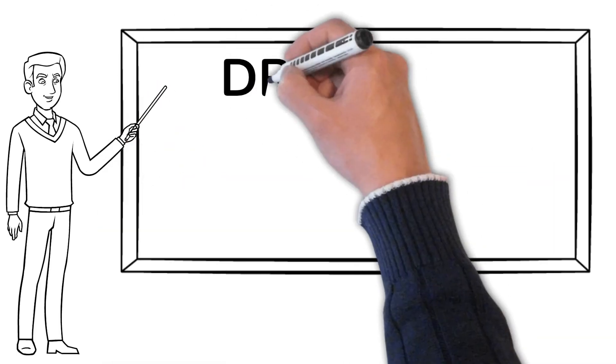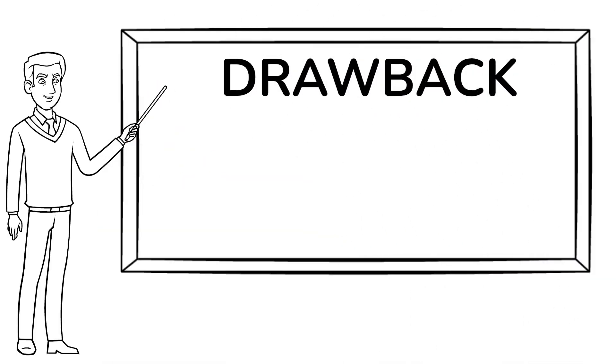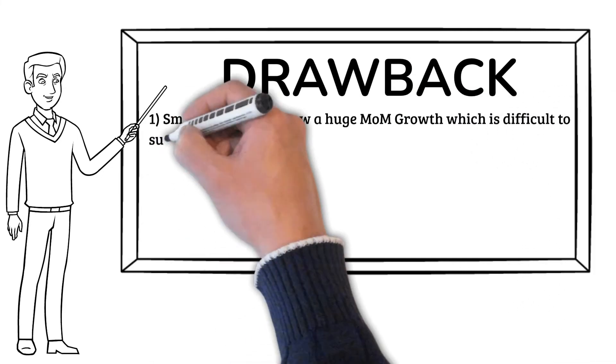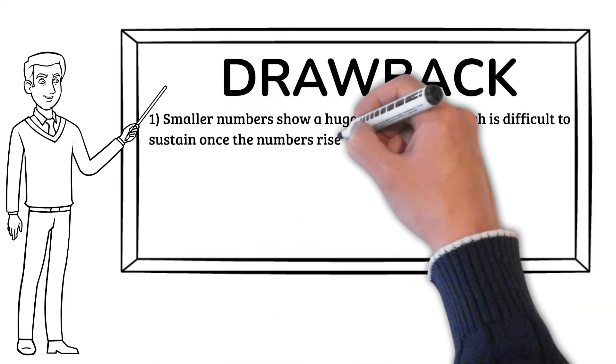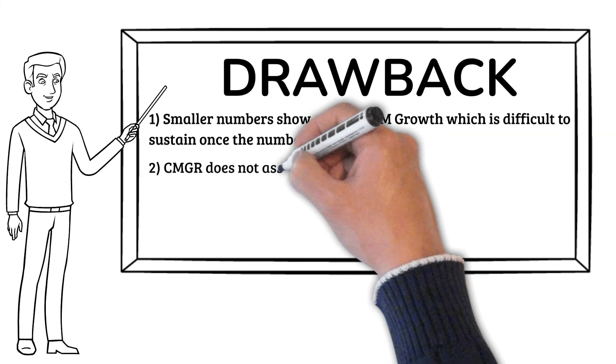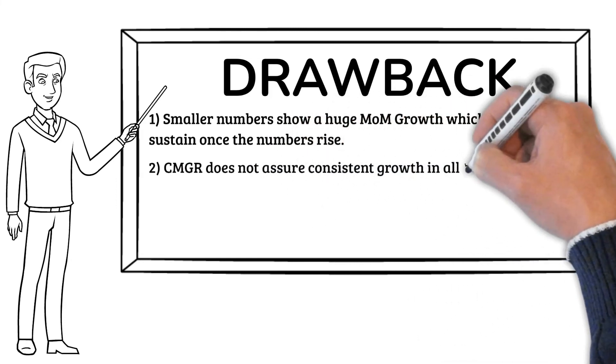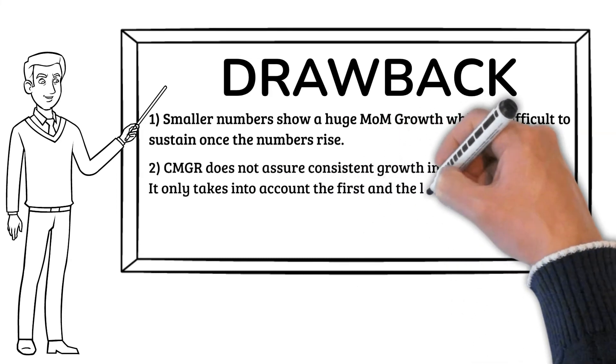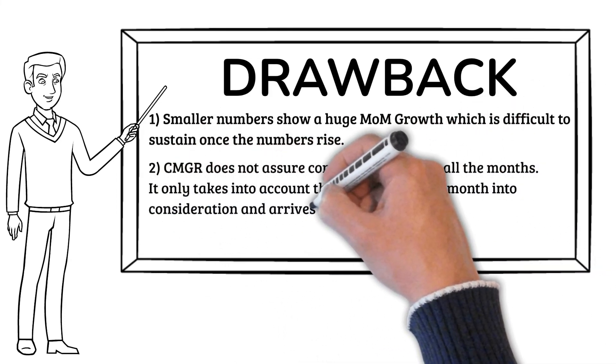Month-on-month growth as a measure has a few drawbacks too. The first one is that smaller numbers show a huge month-over-month growth, which is difficult to sustain once the numbers rise. Secondly, CMGR does not assure consistent growth in all the months. It only takes into account the first and the last month into consideration and arrives at a growth rate.